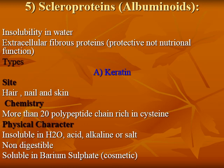The fifth type of simple protein is scleroproteins, or albuminoids. This type is insoluble in water and is present extracellularly as extracellular fibrous proteins, used for a protective rather than nutritional function. Scleroproteins are subclassified into five types: keratin, collagen, gelatin, elastin, and reticulin.